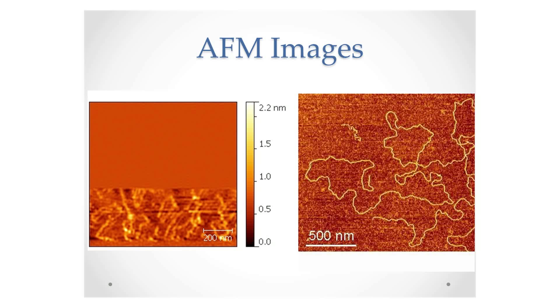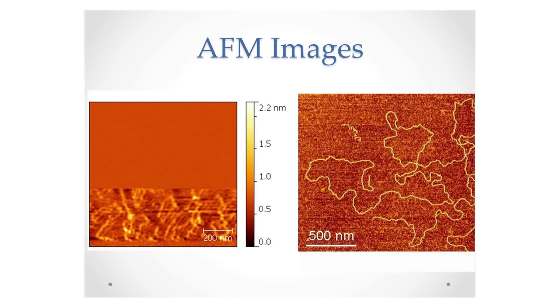On the left is the DNA we imaged using AFM. The scale indicates the height of the DNA sample from the surface of the slide. The sample is made up of lambda phage DNA digested by a restriction enzyme into sections between 500 and 10,000 bases. Our sample is not as clear as the one on the right due to excess noise from dust particles and vibrations.